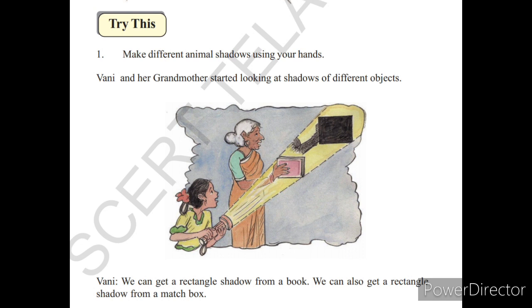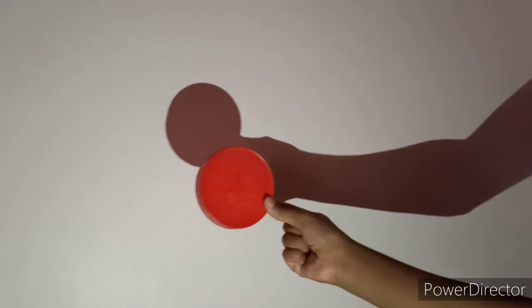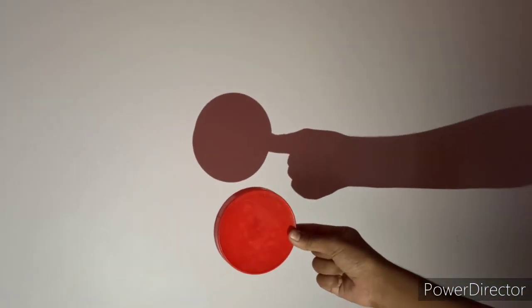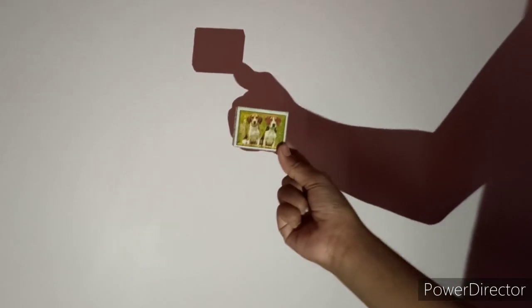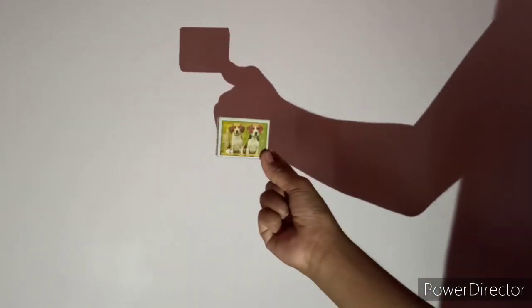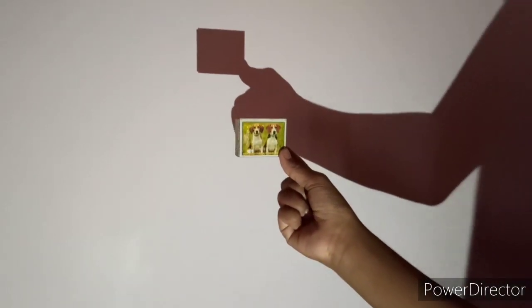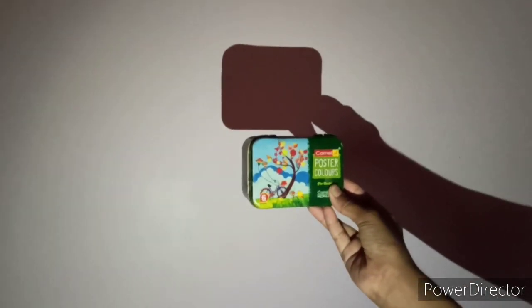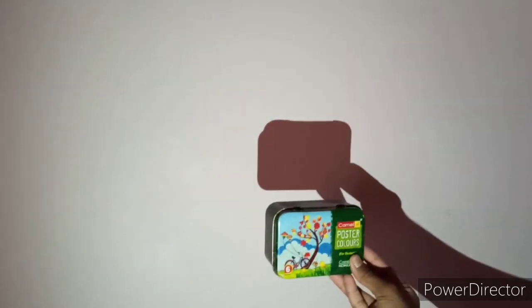Shadows. Bani and her grandmother started looking at shadows of different objects. Let us also try this with different objects. See here we have taken a cap. Its shadow is a circle. See here we have taken a matchbox. Its shadow is rectangle. Already we know matchbox is rectangle so its shadow is also rectangle. Now we have taken a box. Its shadow is also you can see here it is a rectangle.